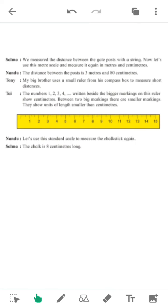So, one meter is equal to 100 centimeters. And 100 centimeters is equal to 1 meter. We measure the distance between the gate posts with a string. Now, let's use this meter scale and measure it again in meter and centimeter. The distance between the posts in 3 meters and 80 centimeters.